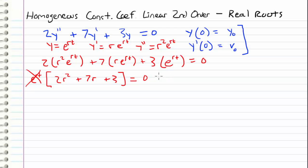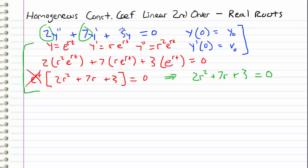This gives us our characteristic equation: 2r² plus 7r plus 3 equals 0. It's worth noting that instead of going through the full substitution process, we can just pull the coefficients off of y double prime, y prime, and y and go immediately to the characteristic equation. That saves time, but we still need to remember this comes from assuming a solution of the form e^(rt).